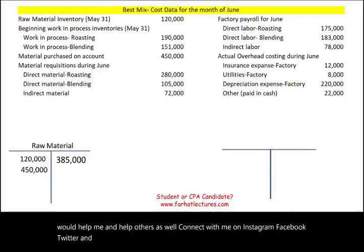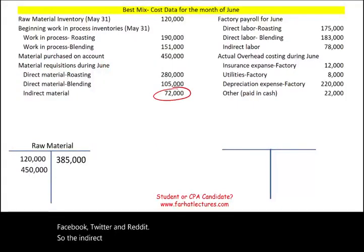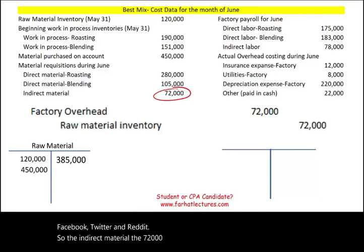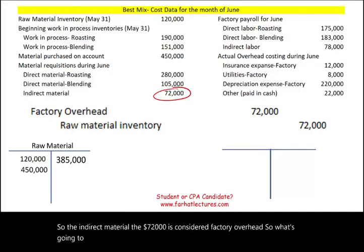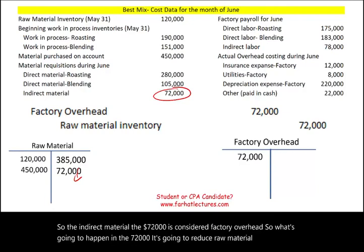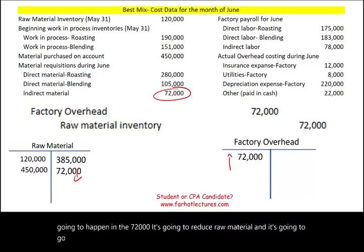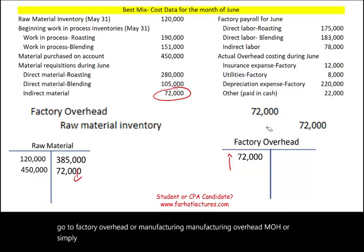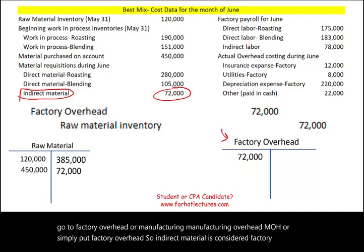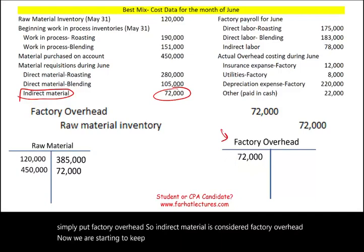The $72,000 of indirect material is considered factory overhead. It reduces raw material and goes to factory overhead — also called manufacturing overhead or MOH. So indirect material is debited to factory overhead, and we start keeping track of that account.